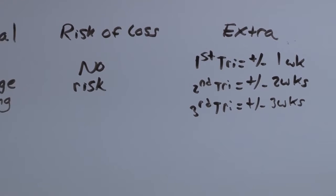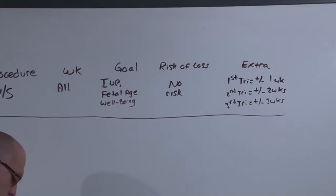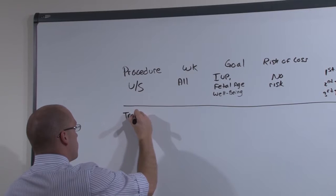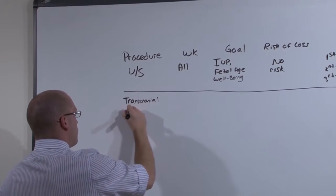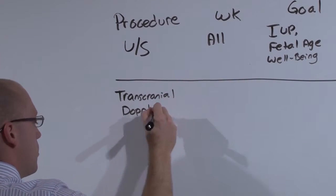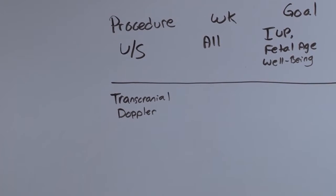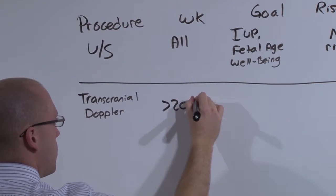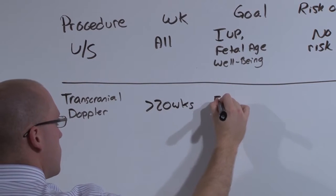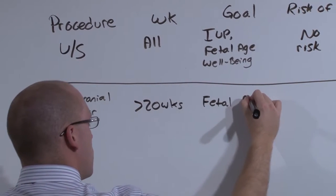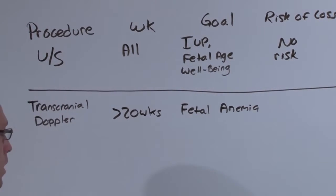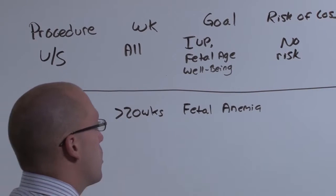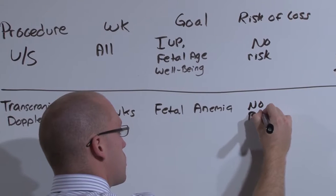The next one we're going to cover is another ultrasound modality. It's not used all the time, but I'm going to talk about it next because it is also safe. It's the transcranial Doppler. It's generally used after 20 weeks and the goal is to assess fetal anemia. This has replaced the PUBS, which we're going to talk about later, in the diagnosis of anemia. And it's replaced the PUBS because transcranial Doppler has no risk of fetal loss. It's just an ultrasound with Doppler.